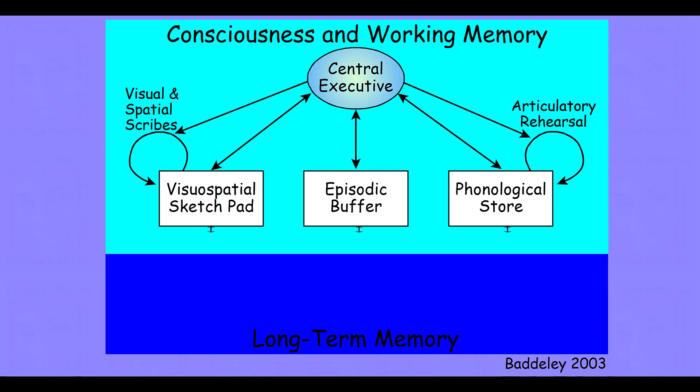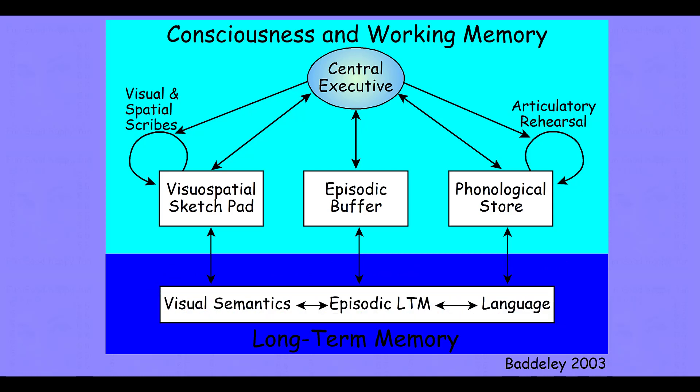The working memory capacity that we have is also a gateway into long-term memory. So our visual semantic memory, our episodic long-term memories, our semantic long-term memories — they are all encoded through their being present in working memory and then consolidated in long-term memory. And of course, working memory pulls up information from long-term memory during the course of problem solving as well.